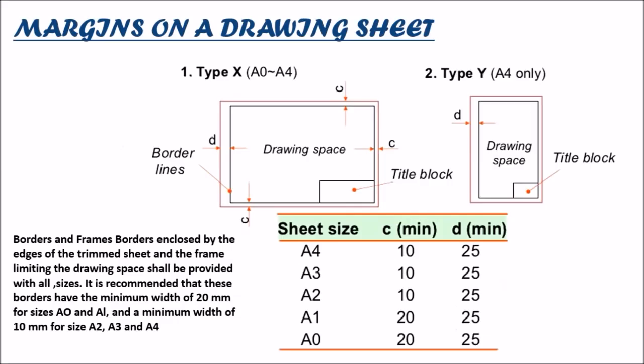If we consider the margins on a drawing sheet, the left hand side margin is always greater than the upper bottom and the right hand side margin irrespective of the orientation of the sheet. The sheet A0 and A1 have the minimum margin of 20 mm and the maximum of 25 mm whereas in A2, A3 and A4 ISO sheets the minimum margin reduces to 10 mm.